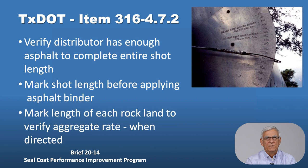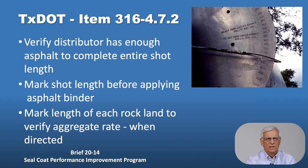Item 316 of the specification book, section 4.7.2, requires us to verify the distributor has enough asphalt to complete the entire shot. We want to make sure the shot length is laid out before applying the asphalt binder, so each shot needs to be laid out in the field. This is a way of controlling shot quantities. We also want to mark the rock lands themselves to make sure the rock is available to cover the asphalt, and we can verify the area rate when directed by the engineer.